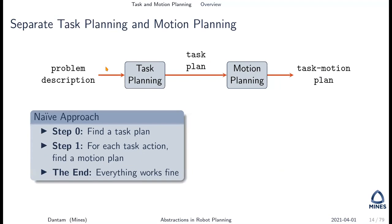So how would we put together task planning and motion planning? What's the naive approach? Find a task plan first, then find a motion plan for everything in that task plan, and then everything works. That's clearly not all there is to it.